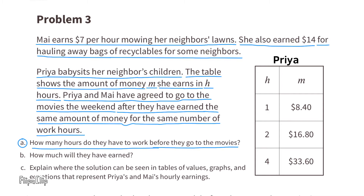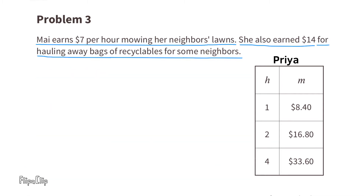From the chart, Priya earns $8.40 each hour. Mai earns $7 per hour plus a one-time $14 for hauling away recyclables. Using Mai's information on the left and Priya's on the right, I can write this equation: 7H plus 14 equals 8.40H. The left side is Mai's earnings and the right side is Priya's earnings, and this equation shows when they've worked an equal amount of time.